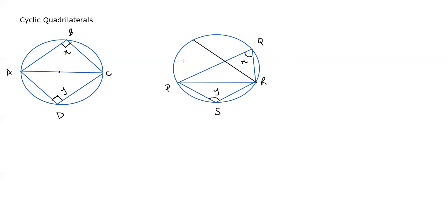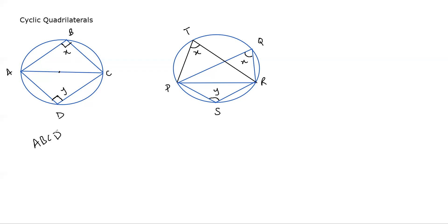If you have an angle here, this angle will also be angle x, because the sum has to be maintained as 180. So if I name this point T, this gives us the second property: angles in the same segment are equal. Now look at ABCD — this is a four-sided shape, a quadrilateral.